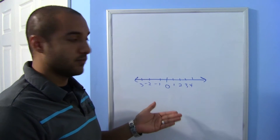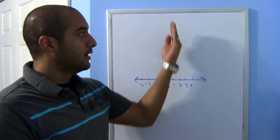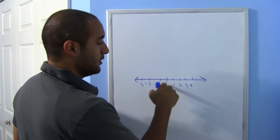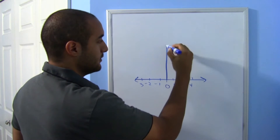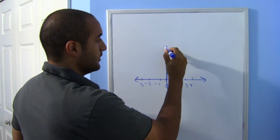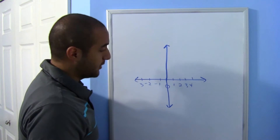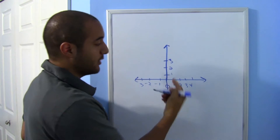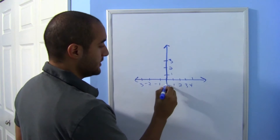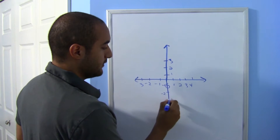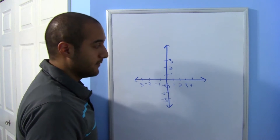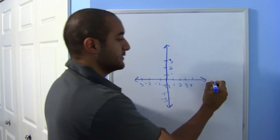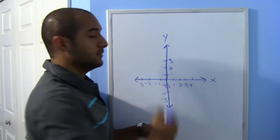If we want to talk about two dimensions — how much something moves up and down — we need another axis. Starting at zero, we can make another number line going up: 1, 2, 3, and positive numbers going up, with negative numbers going down. So here we've made two axes: the x-axis and the y-axis.